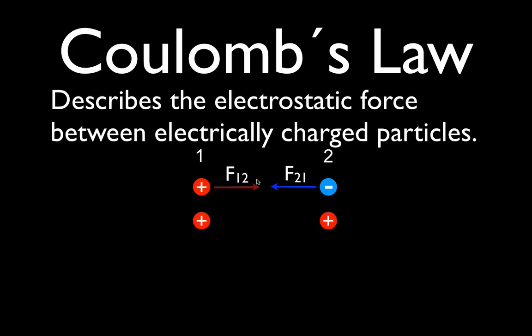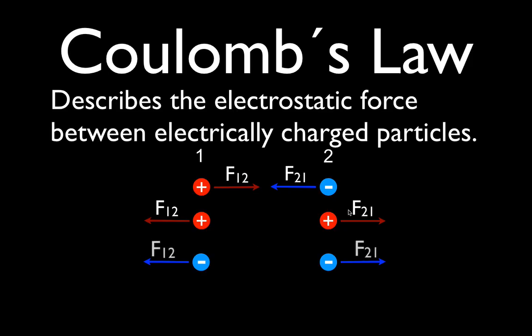We could also have two positively charged particles, and those two particles would repel each other. The same thing applies if we have two negatively charged particles — they repel each other, and we would have F1,2 and F2,1. When we have a word problem, we usually make a sketch, draw the particles, and show the directions of the forces acting on those particles.